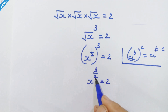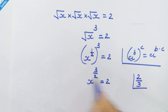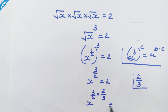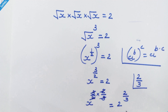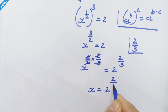To eliminate the exponent, we raise both sides to the power 2 upon 3. So x raised to 3 upon 2 into 2 upon 3 equals 2 raised to 2 upon 3. The 3 and 3 cancel out, giving us x is equal to 2 raised to 2 upon 3.